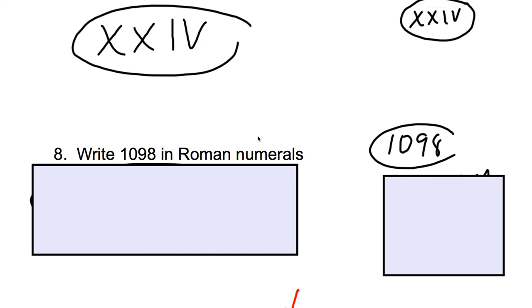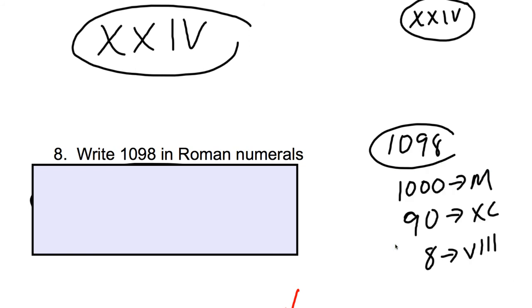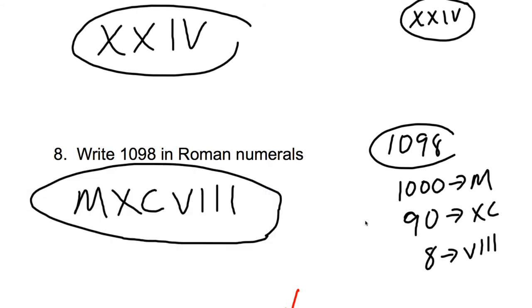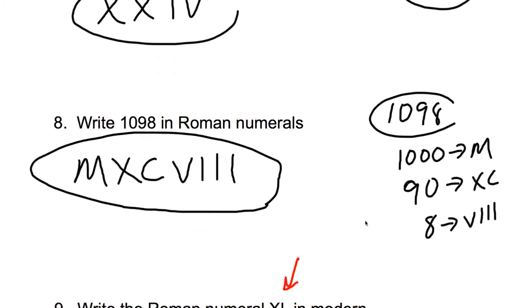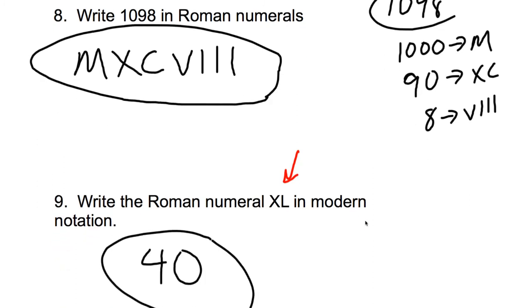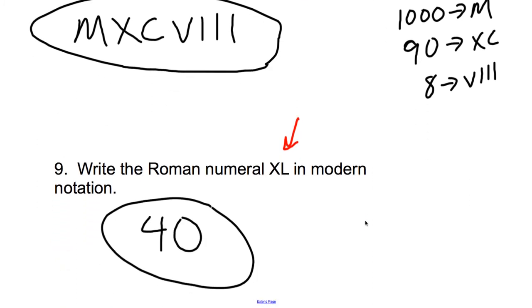If we're going to write the number 1098 in Roman numerals, break up the 1000, there are no hundreds, so then you write the 90, and then you write the 8, and then put it all together. So the 1000 is M, 90 is XC, and 8 is VIII. So putting all that together, MXCVIII. The Roman numeral XL is 40.